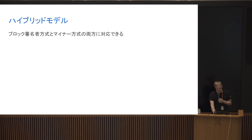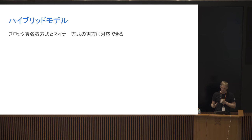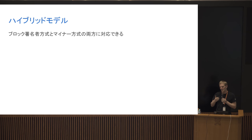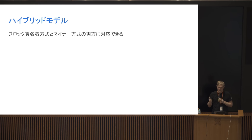You can also do hybrid models. Rootstock, for example, starts out as federated. As miners start doing commitments into the sidechain, the weight of this vote gets slid over to miners. Optimally for their design, the optimal outcome is 100% merge mining and no block signers.